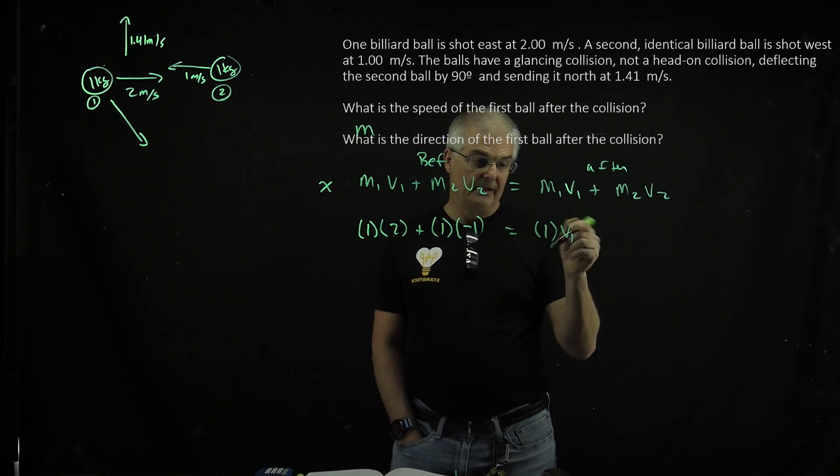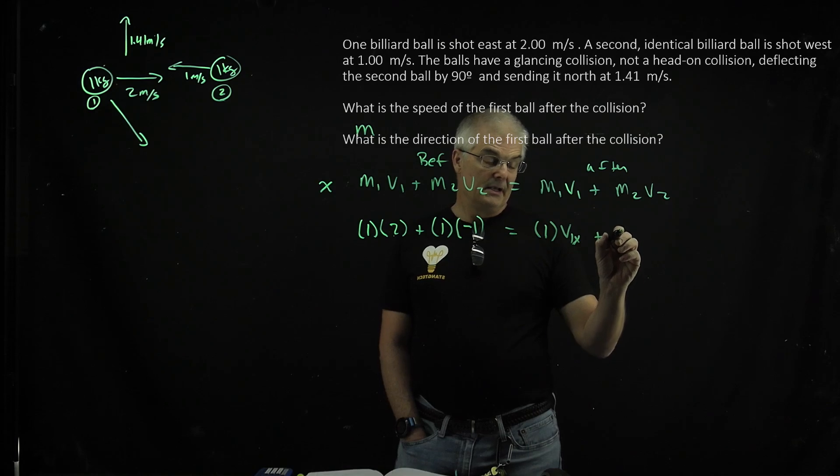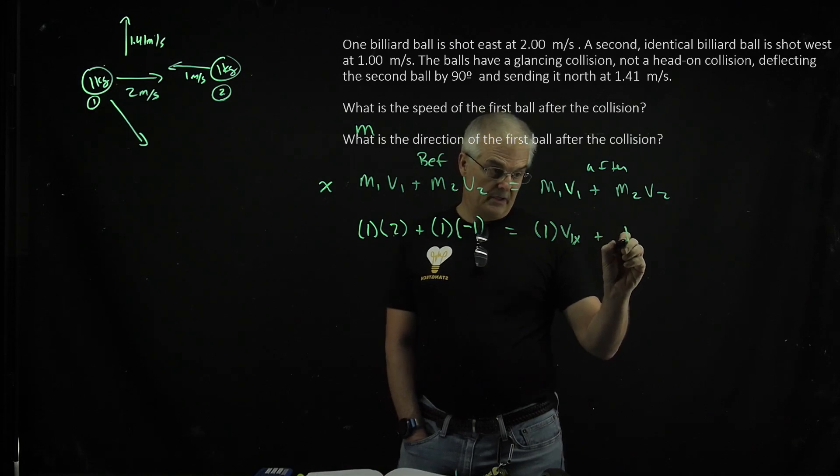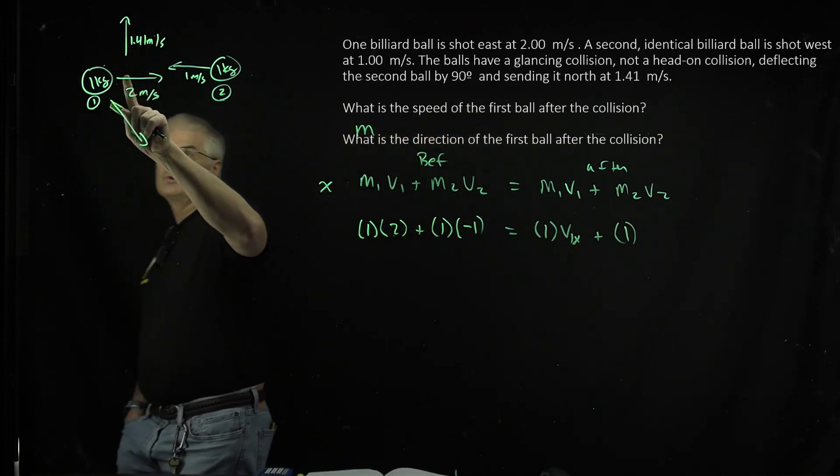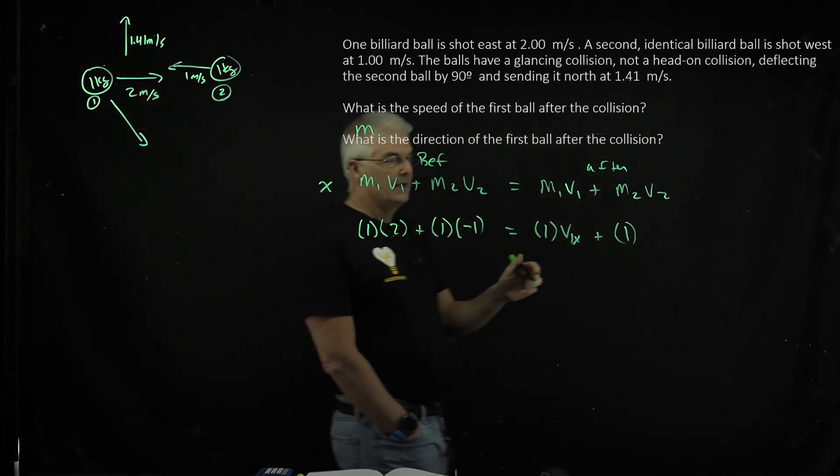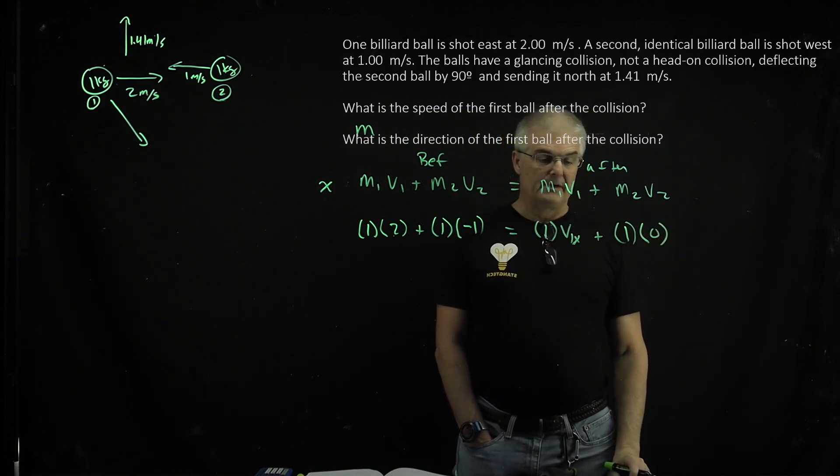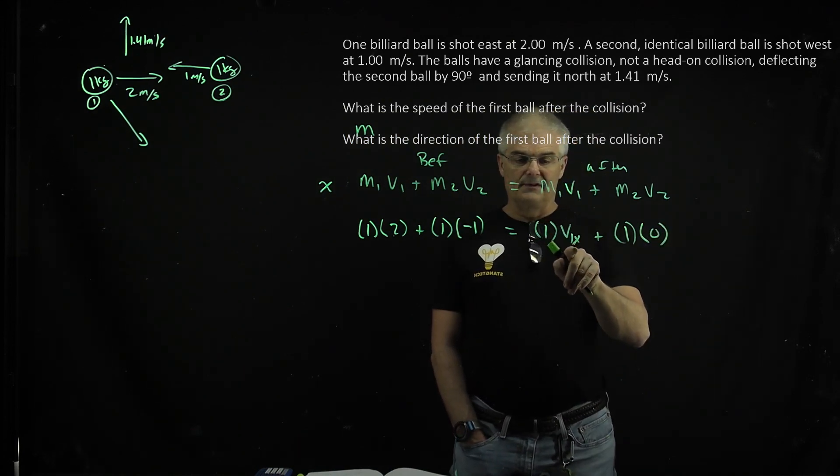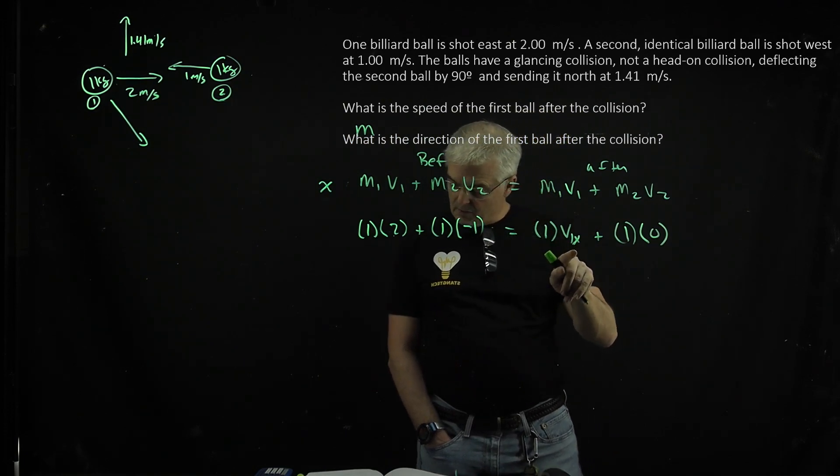That's going to equal 1 times v1, this is in the x. Let me just call it v1x, plus m2, which is 1. And in the x direction, remember the ball is only shooting straight north. He's going to have 0, right? So we can find the velocity in the x direction from this equation.